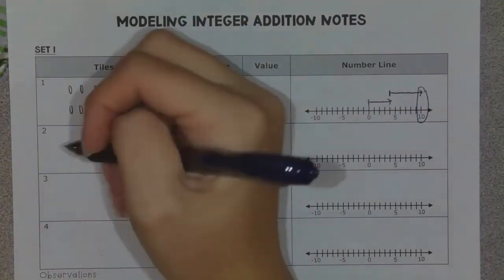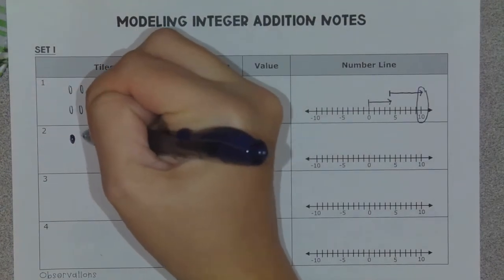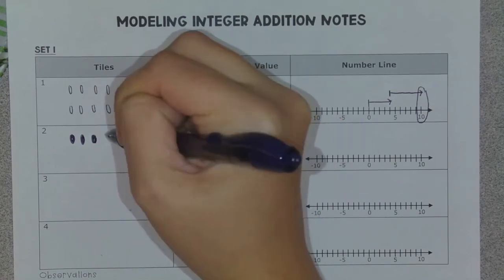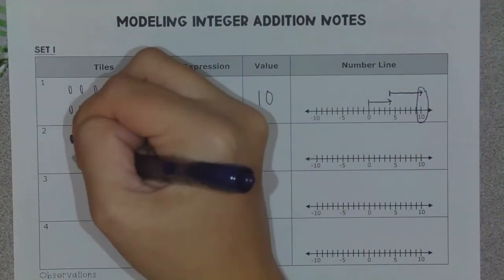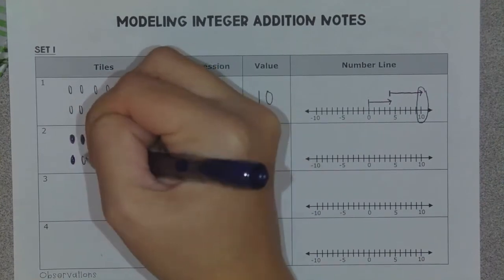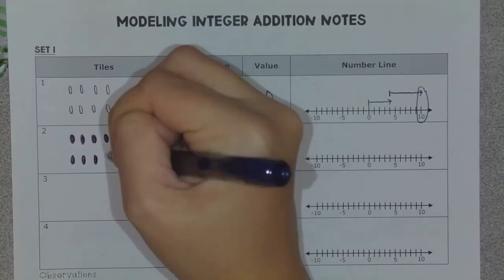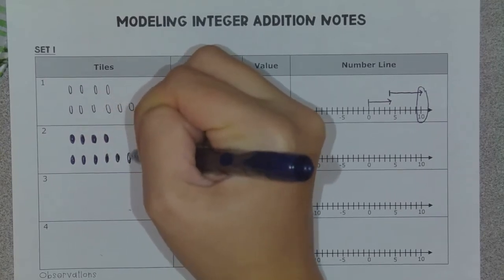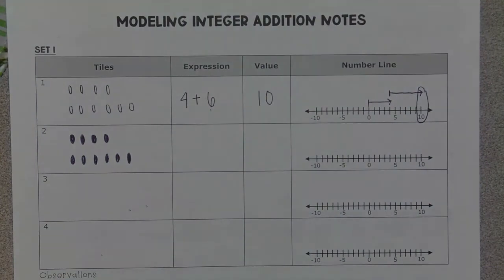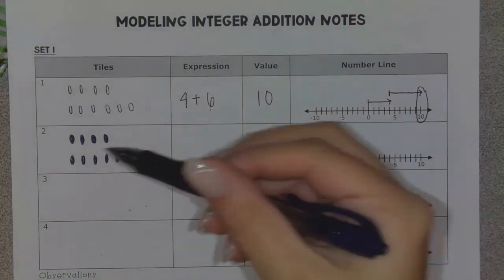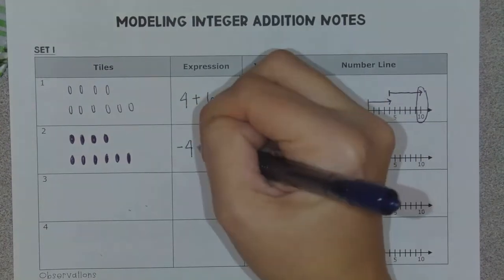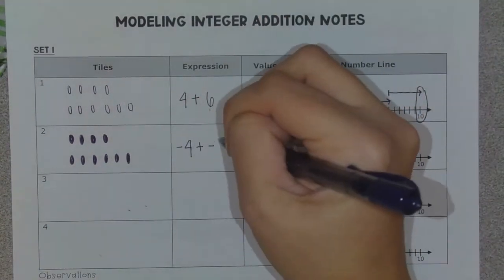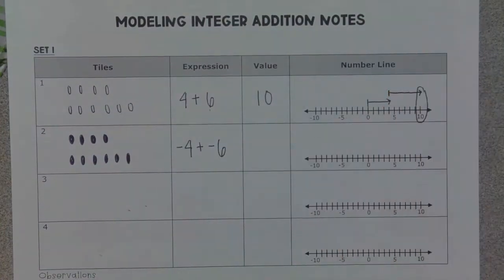For our second one, this time I'm going to start with four negatives — four shaded-in circles. And then I'm going to put six negatives right below it. When I write my expression, I'm going to start with the number that's up at the top, so that would be negative four plus, and then I have six negatives down at the bottom.